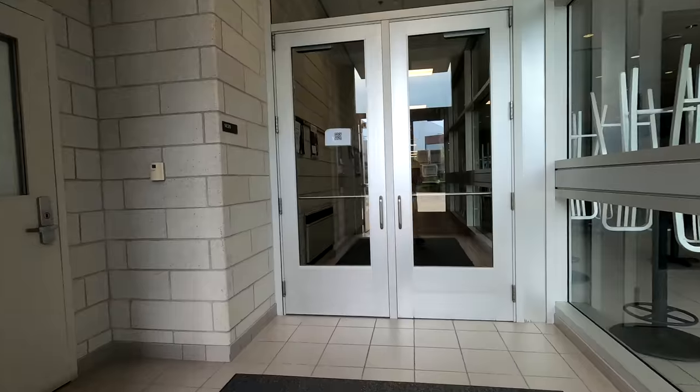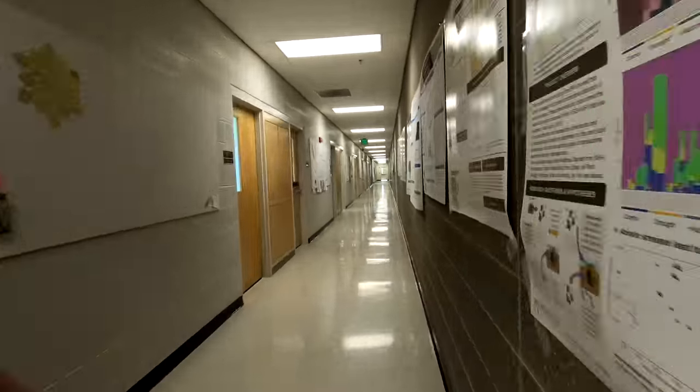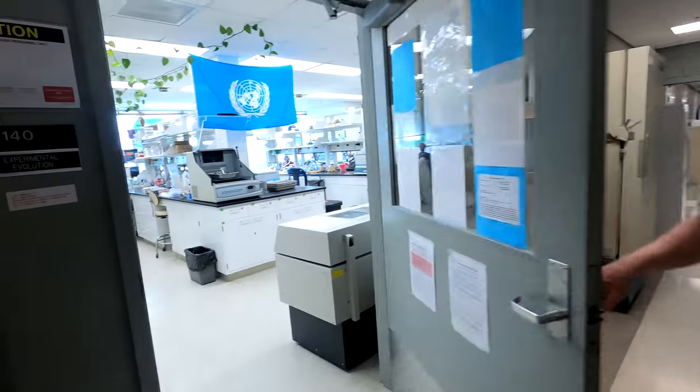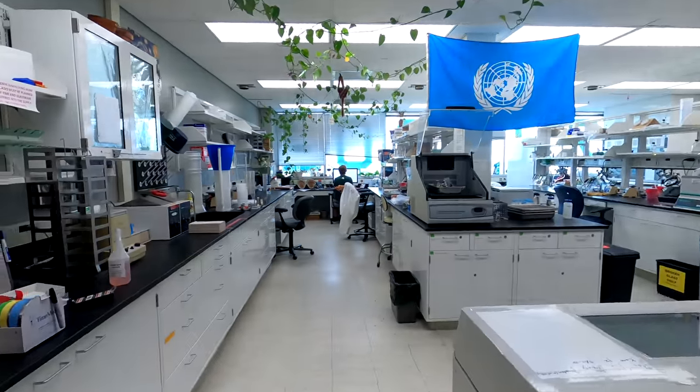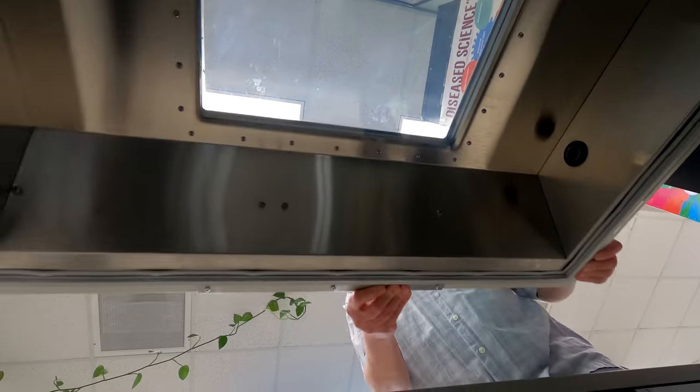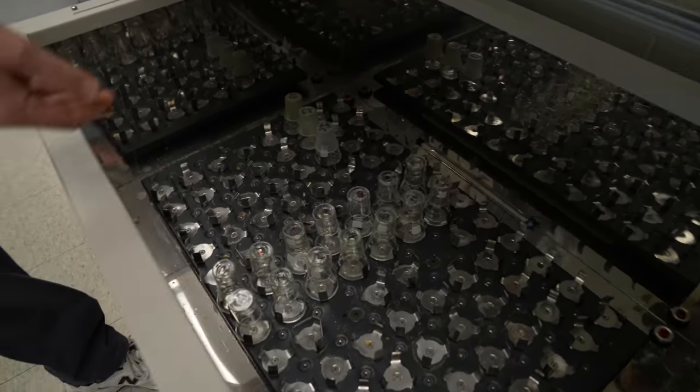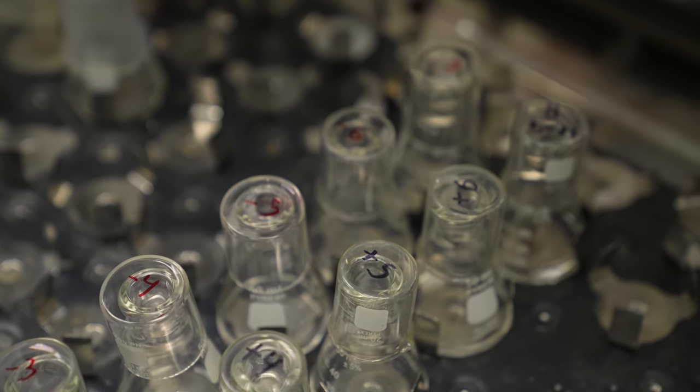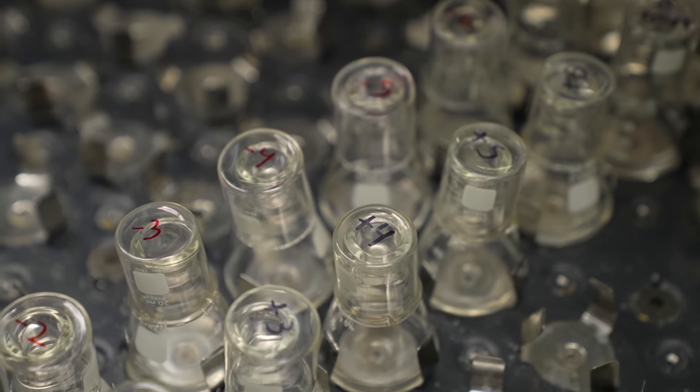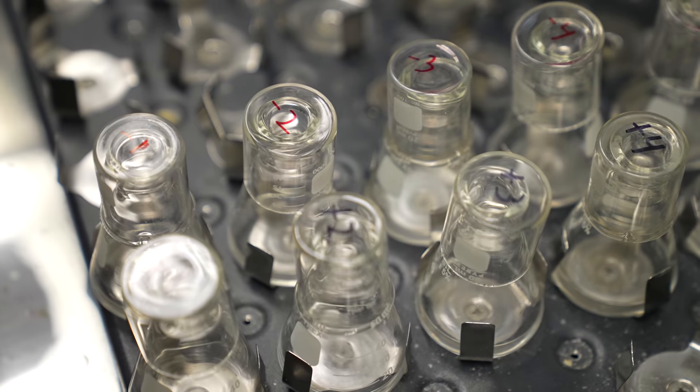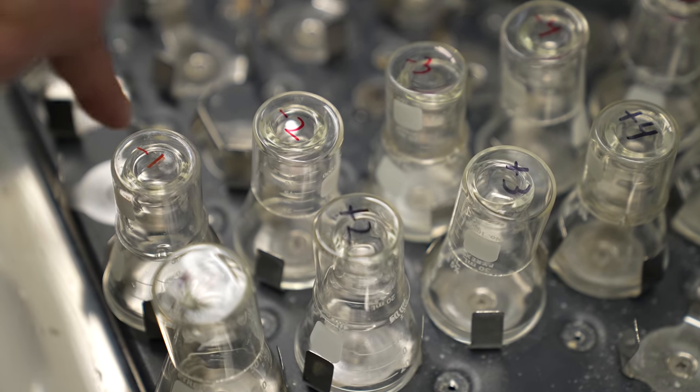This is Richard Lenski. He started the experiment 33 years ago, and along with a team of colleagues, he has kept it going, even on weekends, ever since. In this lab are 12 flasks of live E. coli bacteria. They are the lucky few, the ones that have survived over three decades of evolution in a lab. So there are 12 long-term lines. In 1988, a single common ancestor spawned these 12 separate populations, and ever since that day, they have been growing and dividing independently.